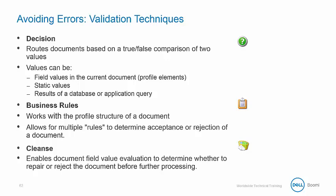There are several validation techniques that can be utilized to help us avoid errors. You can use the Decision shape to route documents based on comparative values for a single element. The Business Rules shape works with the profile structure of the document and allows rules to determine acceptance and rejection of documents.